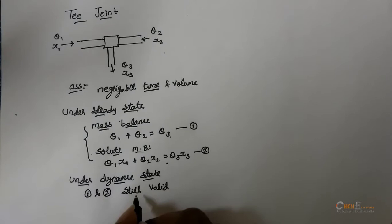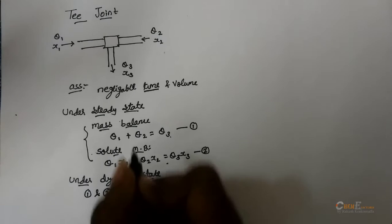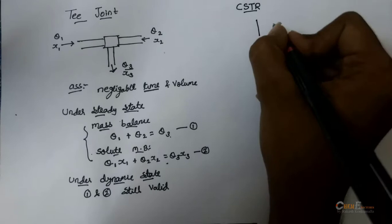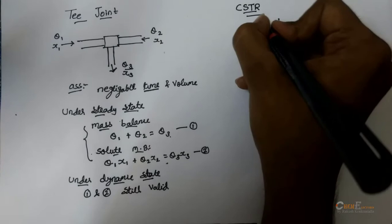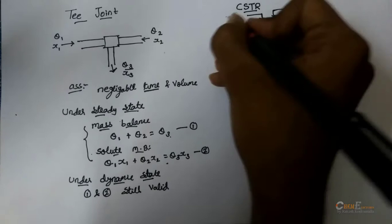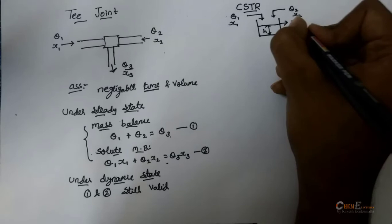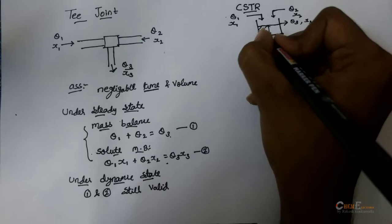But in process plants, we won't be using T-joints because there will be too many fluctuations in the exit concentration. So, we will consider a CSTR where there will be perfect mixing. So, a CSTR has two inputs having mass flow rates Q1, Q2 and solute concentrations X1, X2. The output is positioned at such a height, let we call it as H. And the output has a Q3 mass flow rate and X3 solute concentration. As this reactor consists a definite volume of V.